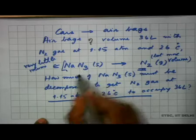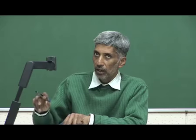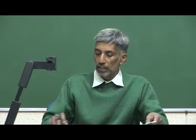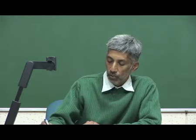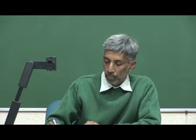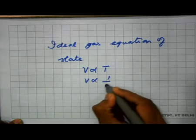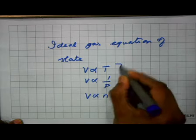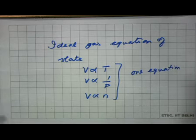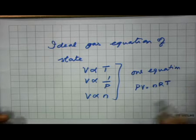In the next class we will look at the ideal gas equation of state, which couples Boyle's, Charles's, and Avogadro's laws — using V ∝ T, V ∝ 1/P, and V ∝ N — to get one equation: PV = NRT.